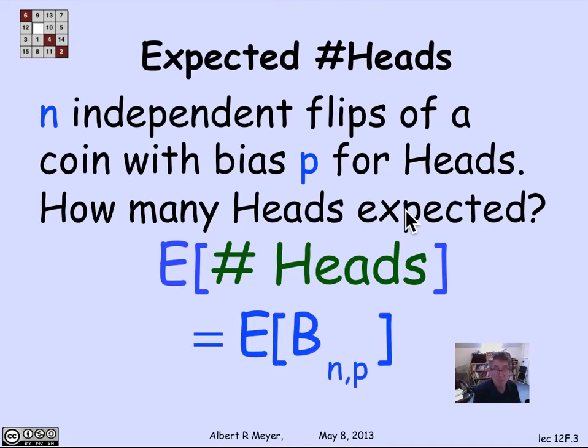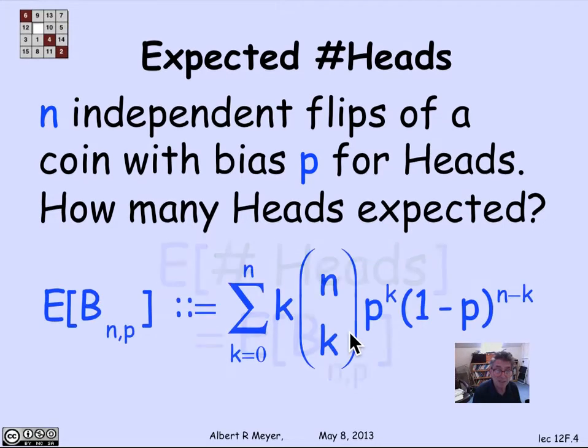We've examined the binomial distribution B_{n,p}. B_{n,p} is telling us how many heads there are in independent flips. So we're asking about the expectation of the binomial variable B_{n,p}. Well, let's look at the definition. The definition of B_{n,p} is it's the sum over all the possible values of b, namely all the numbers from 0 to n, that's k,